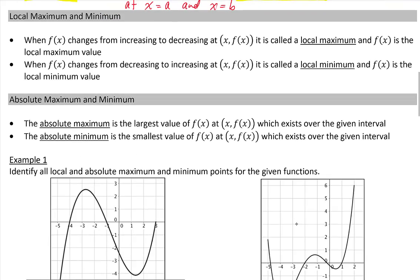Let's look at local maximum and local minimum. When a function changes from increasing to decreasing, it is called a local maximum — think going up and then back down. f(x) at that point is called the local maximum value or y value. When f(x) changes from decreasing to increasing, it is called a local minimum, and f(x) is called the local minimum value.